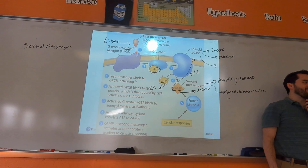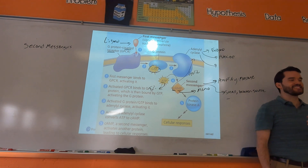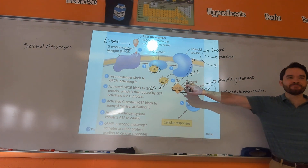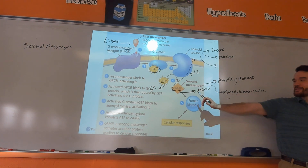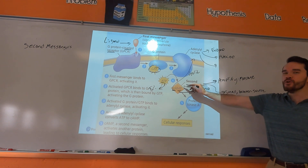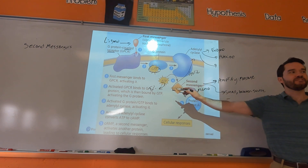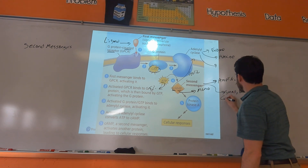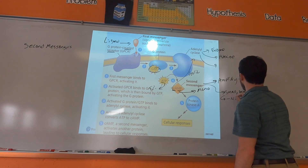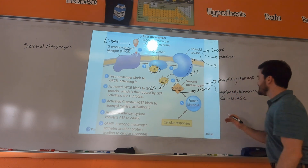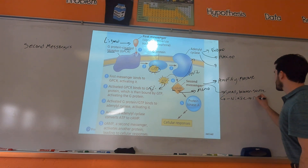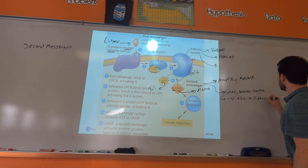Think of it like running backs in the NFL — it's helpful to be really small and fast. They need to move around, get around stuff in the cytoplasm. Being small makes them nimble and lets them diffuse easily. Now, why are they water-soluble? The cytoplasm is made of water. If they were oil-soluble, that wouldn't be helpful because they couldn't move around in the water. So they're water-soluble and small because that helps them move around in the cytoplasm, which is made of water.